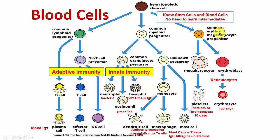The erythroid and megakaryocyte progenitors give rise to the megakaryocyte, which breaks up into platelets — also called thrombocytes — which are very important in blood clotting. We also have the erythroblast that goes to the reticulocyte and finally to the erythrocyte, which has no nucleus or mitochondria but is loaded with hemoglobin and transfers oxygen from the lungs to tissues. This cell lives for 120 days.